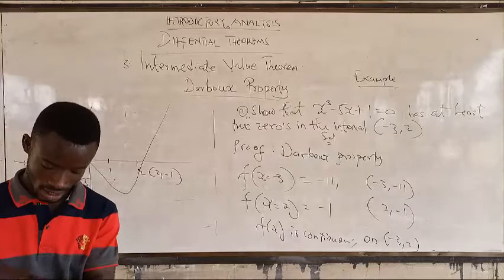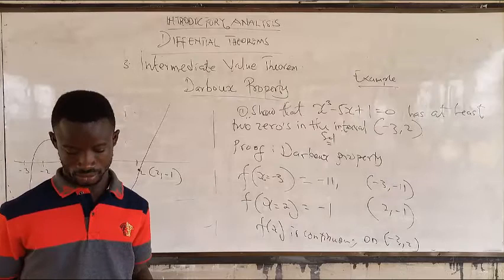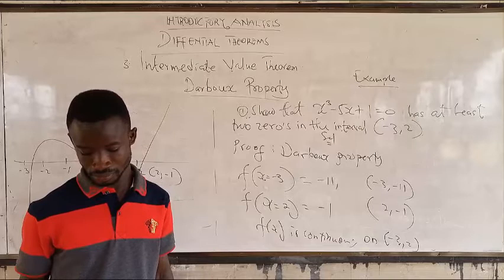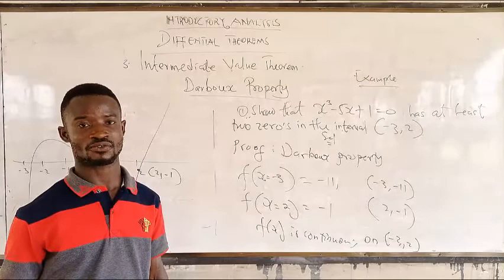Then you conclude. Since we are getting real values, we conclude that the function has at least two solutions in the interval of negative three to two.